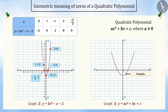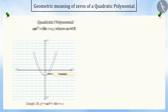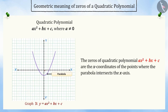With the help of the table, we find that 1 and −2/3 are the two zeros of this polynomial, which are the x-coordinates of the points of intersection of the x-axis for the graph of y = 3x² − x − 2. On this basis, we can say that the zeros of the quadratic polynomial ax² + bx + c are the x-coordinates of the points where the parabola intersects the x-axis. This result is true for all quadratic equations.